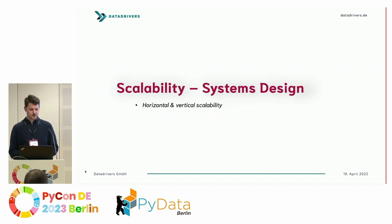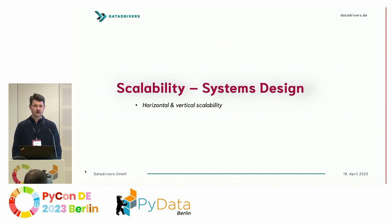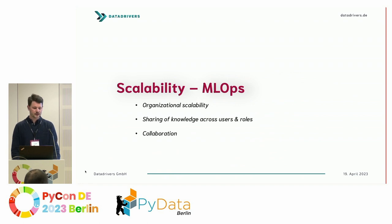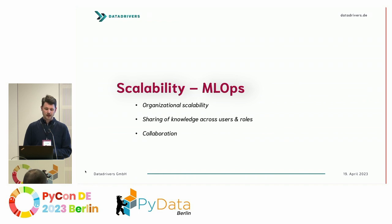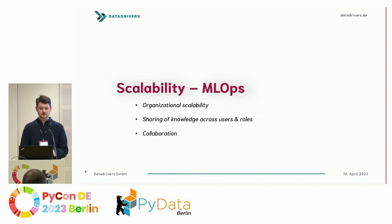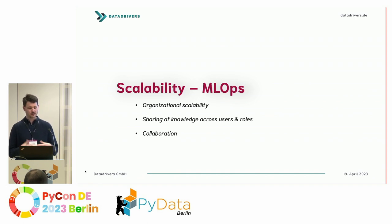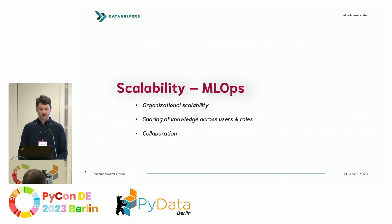Now let's switch to scalability — we also have a notion from systems design, like horizontal and vertical scalability in terms of compute resources. But I think the most important twist for MLOps is that scalability has to do with organizational scalability and the possibility to share knowledge across users and roles. It's not only about enabling other data scientists to collaborate with you, but also making your work shareable with people in other roles — like data engineers or cloud engineers who help deploy solutions.